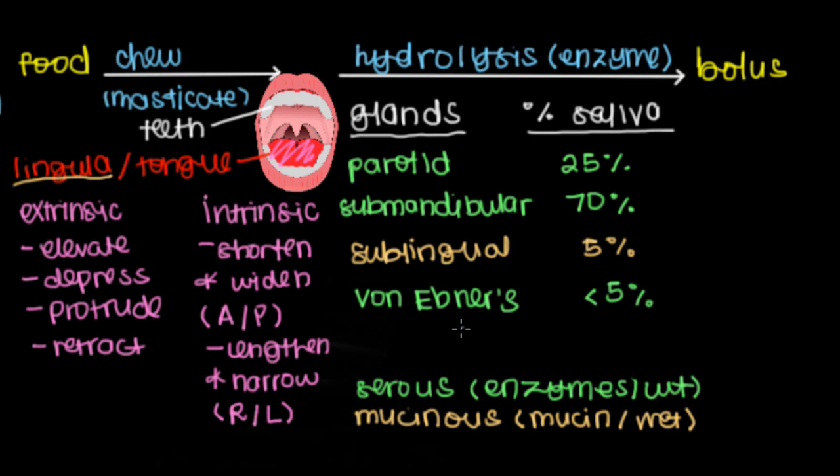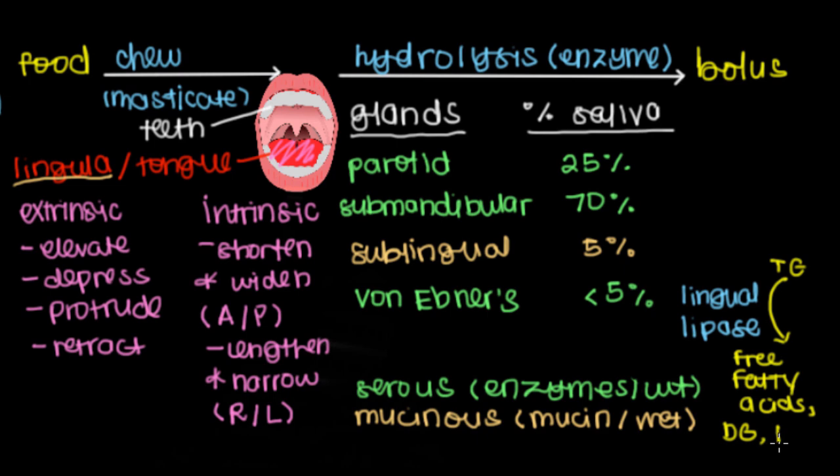What's special about von Ebner's gland is that they release an enzyme called lingual lipase. Lingual lipase, as the name suggests, breakdown lipids or more specifically triglycerides. These triglycerides are broken down into free fatty acids as well as diglycerides or monoglycerides.